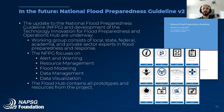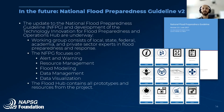The current working group is working on the next version, consisting of local, state, federal, academic, and private sector experts, looking at differences in technology and processes since 2017. The guide focuses on five key areas: for alert and warning, utilizing geofences, identifying appropriate language, and designing public maps to convey information; resource management, using tools to address flood impacts; flood modeling, providing a snapshot of available flood models and when to use each; data management, addressing how to manage authoritative and crowdsourced data sources; and data visualization, creating actionable output from data for multiple stakeholders.